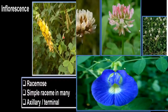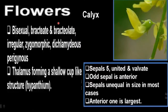Inflorescence: either racemose — simple raceme in many, axillary or terminal. Globose head in Trifolium repens. In the case of Clitoria, it is solitary. Flowers are bisexual, bracteate, bracteolate, irregular, zygomorphic, and dichlamydeous. Perigynous: the thalamus forms a solen cup-like structure called the hypanthium.